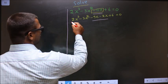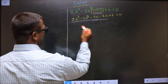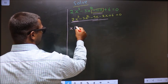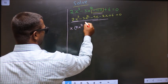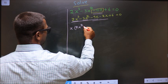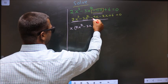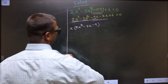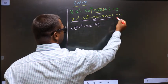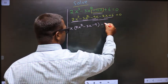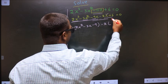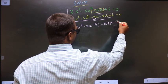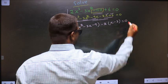What can you take out common from the first three terms is x. So here you get 2x² and here you get minus 3x and here you get minus 9. What can you take out common from the last two terms is minus 2. Here you get x and here you get minus 3, equal to 0.